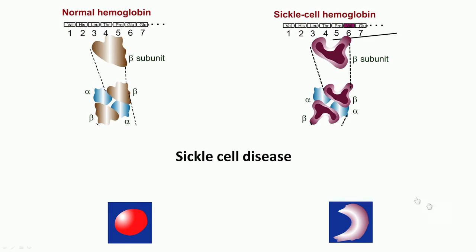Let us review sickle cell disease. Normal hemoglobin is a protein made from genes coding for its subunits. In a normal hemoglobin gene, there is a glutamic acid in the sixth position. If that glutamic acid is changed to valine, just that one change brings about a different conformation — different 3D folding of the protein subunits — and we get a hemoglobin molecule that can easily crystallize out and cannot carry oxygen normally. That is how simple it is.